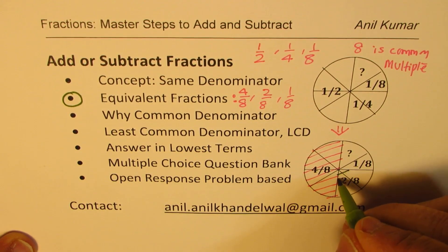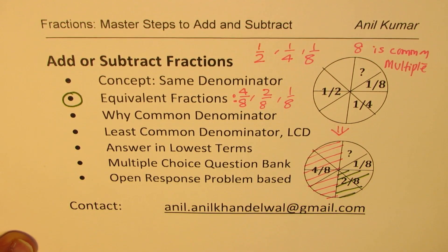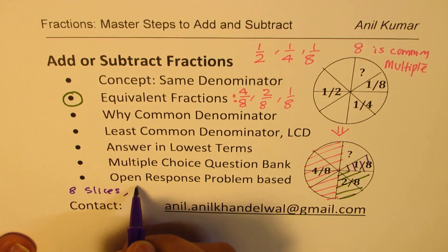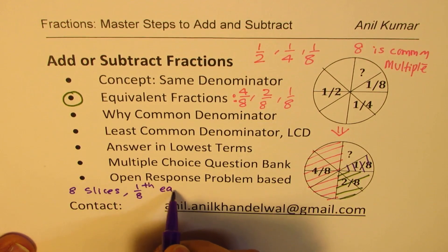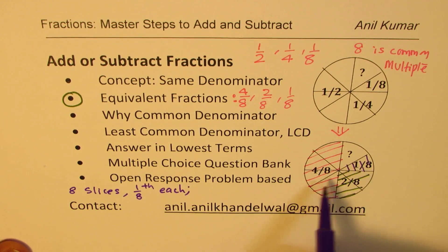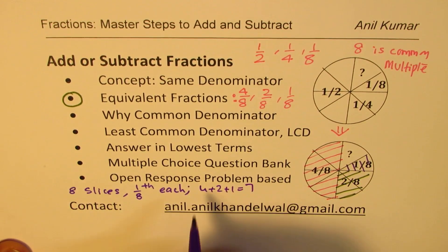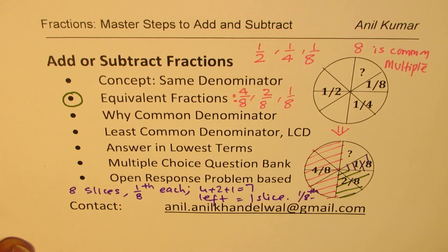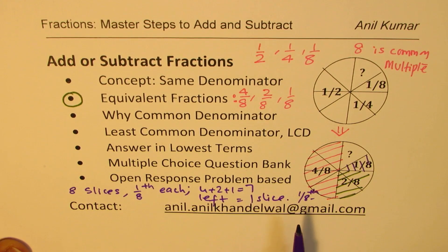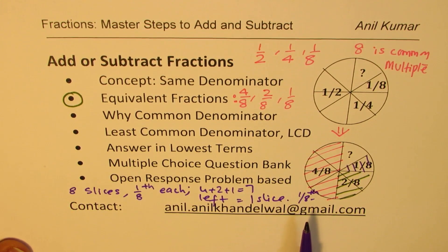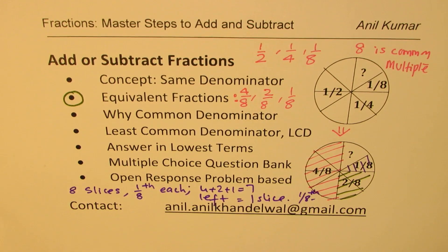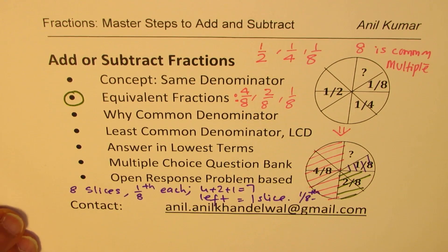With equivalent fractions four over eight, two over eight, and one over eight — I have four-eighths kept for myself, two-eighths given to Kate, and one-eighth given to Dave. I have eight slices total, one-eighth each. Four plus two plus one equals seven accounted for, so one slice of one-eighth is left. That is how we add and subtract fractions — adding all portions and taking away from one whole.